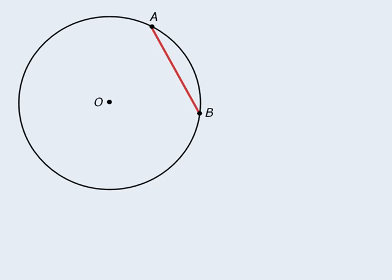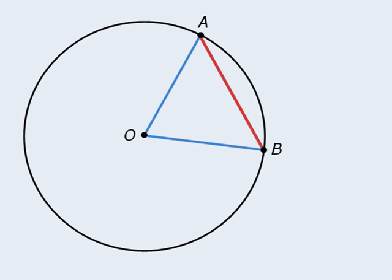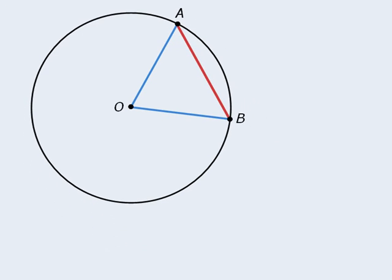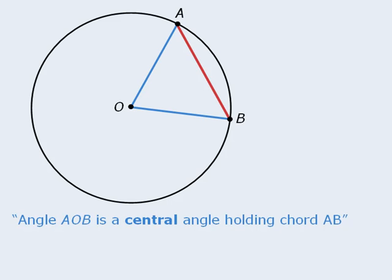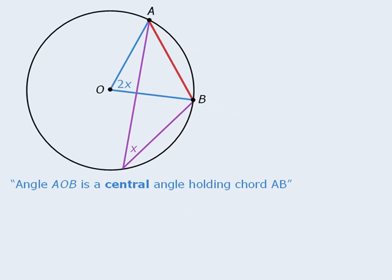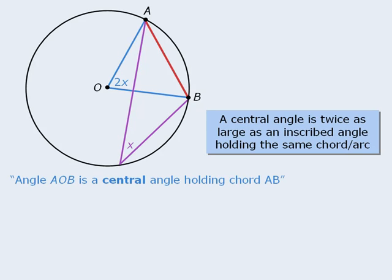For the next property, we must introduce another definition. An angle that has its vertex at the center of a circle is called a central angle. So here, angle AOB is a central angle holding chord AB. Now here comes the property. If we have an inscribed angle holding a chord, and that angle is x, then the central angle holding the same chord will be 2x. To summarize: a central angle is twice as large as an inscribed angle holding the same chord or arc.